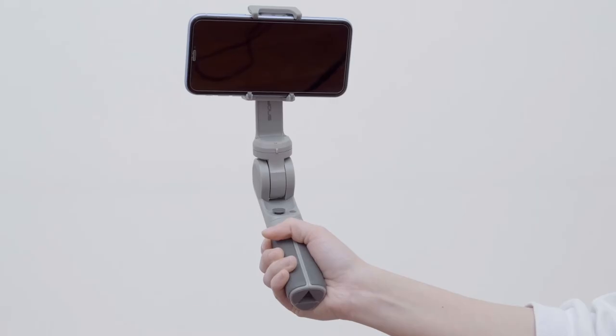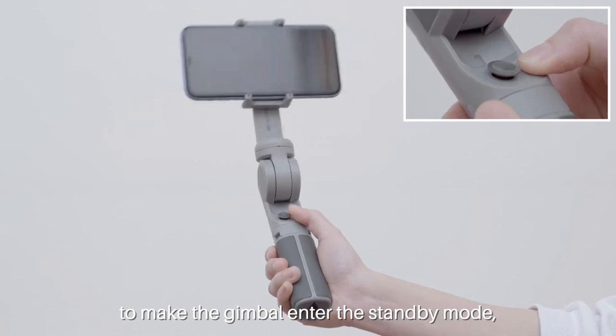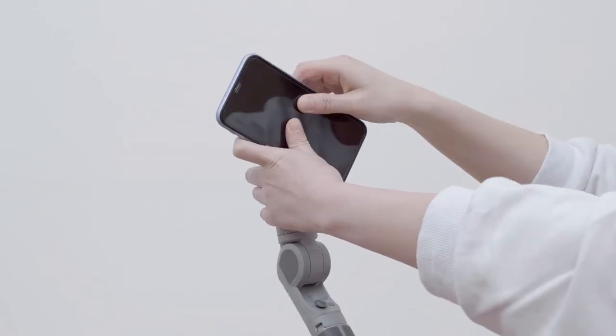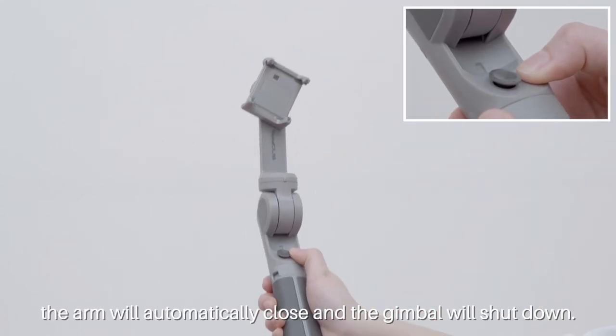When turning off the phone, press and hold the function key for one second to make the gimbal enter the standby mode, and then remove the phone.